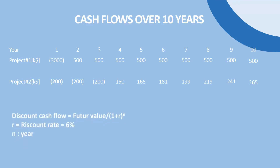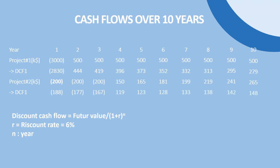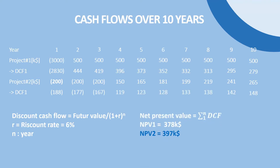If we discount those outflows and inflows to the present with a discount rate of 6%, using the money present value formula from the last video, we will get the following results. To compute the net present value we just need to sum up all those values. So project 2 would be more profitable because of the greater net present value.